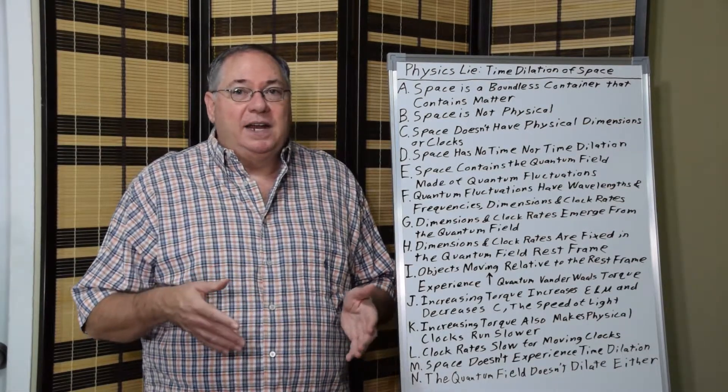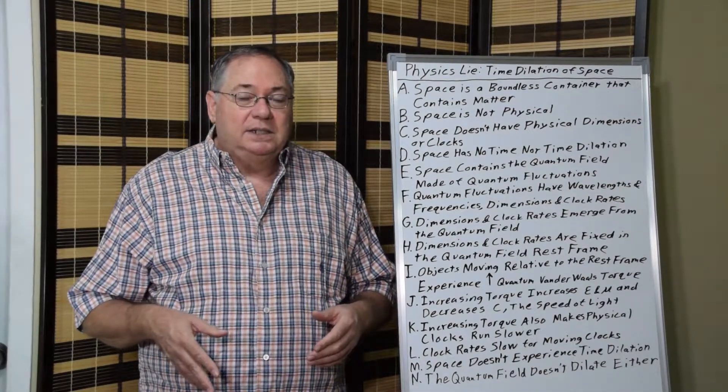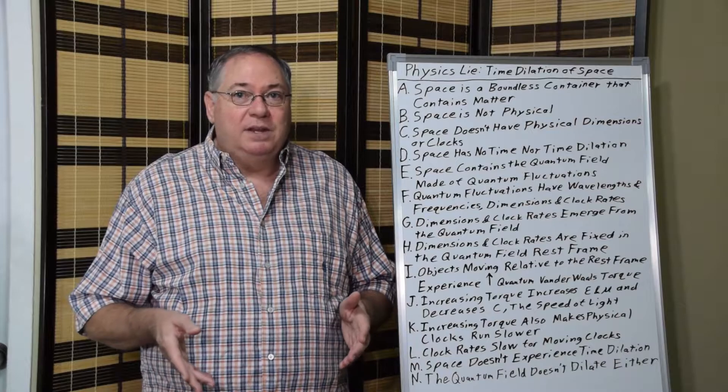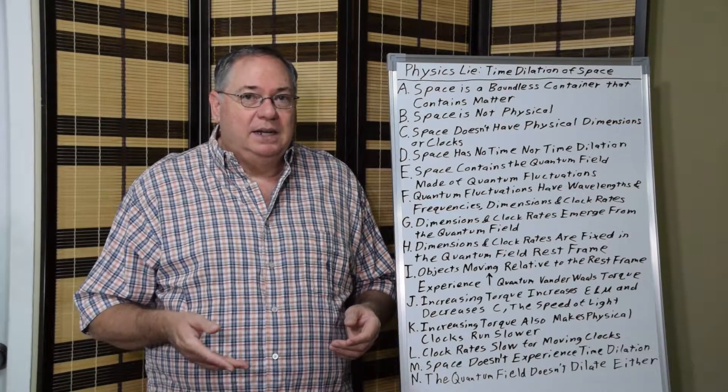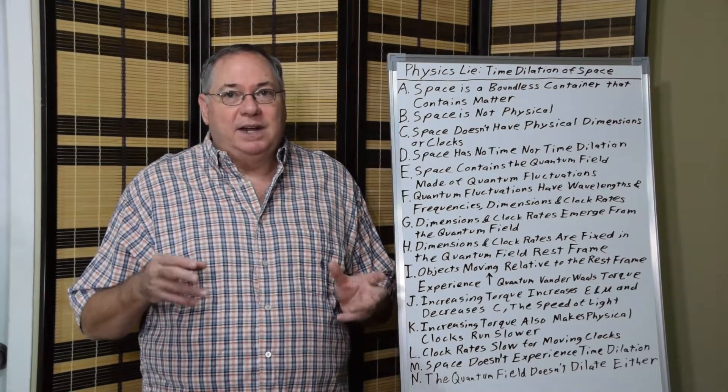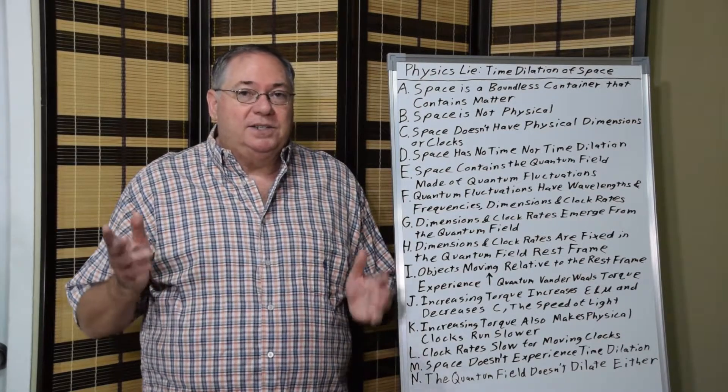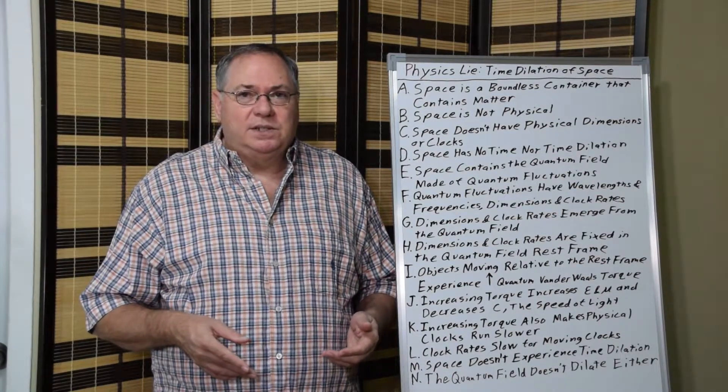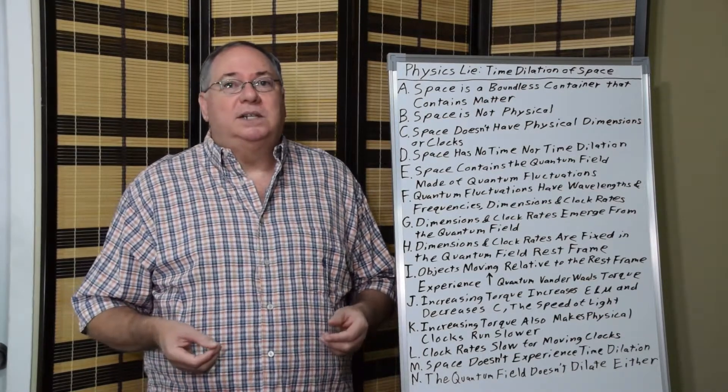By Einstein saying that space has no physical substance in it, no ether, no quantum field, it can't have dimensions or clocks. And this is one of the fundamental flaws in the logic of Einstein's thought experiments. And for reasons unknown to me, most physicists don't question it, even though it's blatantly a violation of logic.